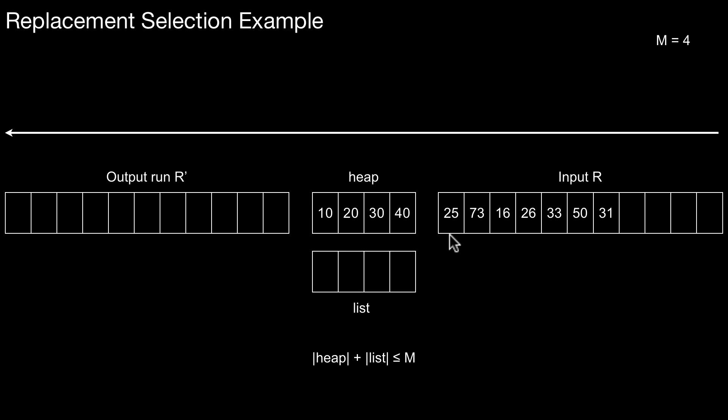So in the algorithm, how it works is we always remove the top element from the heap. Let's do that and write it to the output R'. That is what happens here. Now there is some space left for the next element. What we do in this situation is we read the next element from input R. There are two situations now we have to differentiate. The first is the element we draw is larger than the element we just drew out. That is what happens here. 25 is larger than 10, which means it is okay to insert this element into the heap.